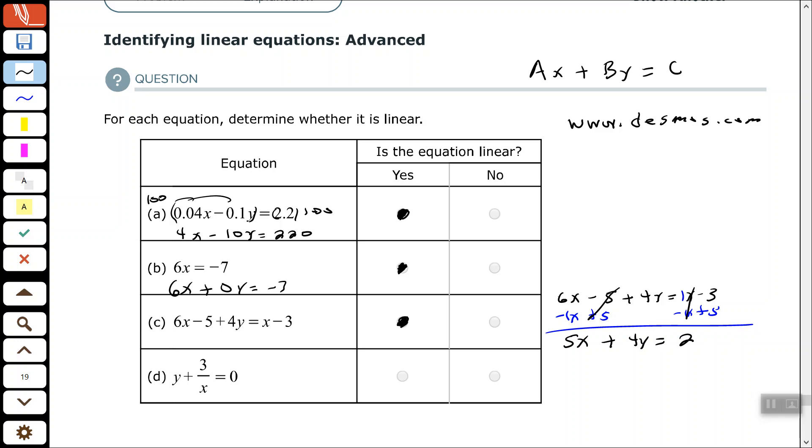Ax plus By equals C. So, if you can get it in that Ax plus By equals C form, then it is a linear equation.